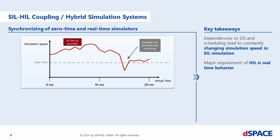But at some point, the operating system like Windows gives the simulator fewer resources, so the simulation speed drops below real-time. On the other hand, the hardware in the loop simulator requires exact real-time. So we somehow need to compensate for that.